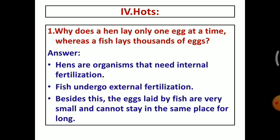The next Roman, hots question. The first question, why does a hen lay only one egg at a time whereas a fish lays thousands of eggs? We know that the hen lays only one egg at a time but at the same time fish lay thousands of eggs.